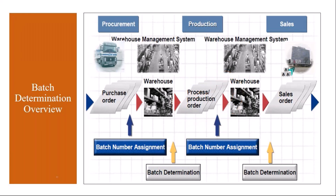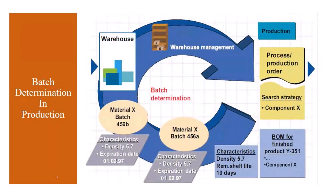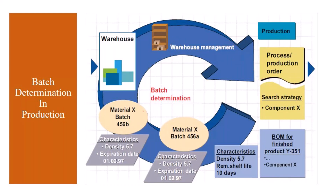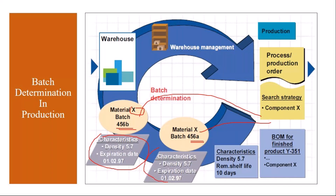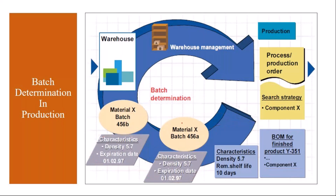When you create a production order, you have raw materials in the warehouse. Based on a certain search strategy, the system picks the batches into the order. For example, component X has two batches: 456A and 456B. Which one to pick is based on characteristics — as discussed in the previous session on batch classification — and the system picks the batches for the component in production using that search criteria.